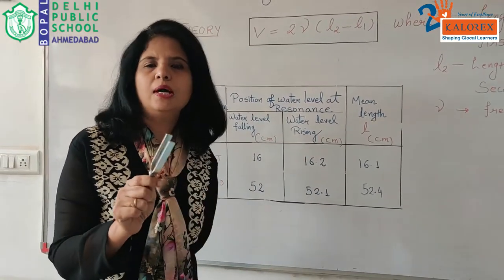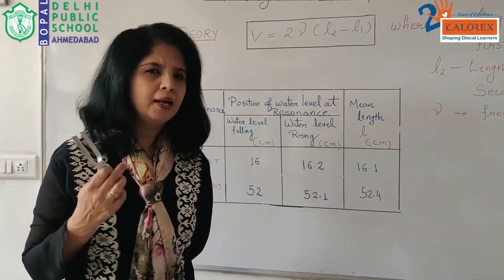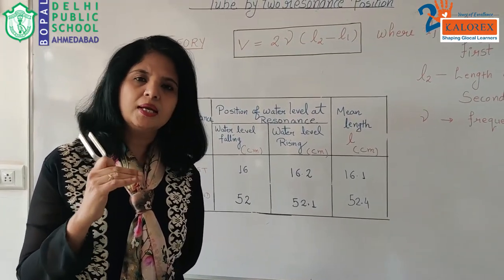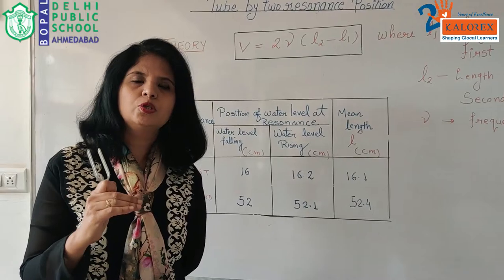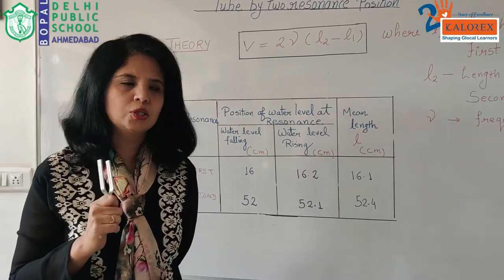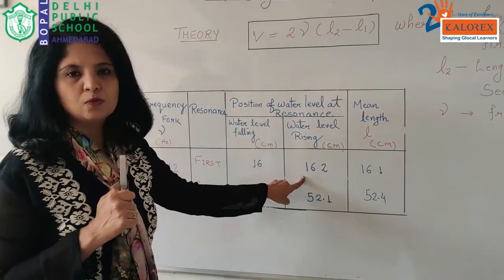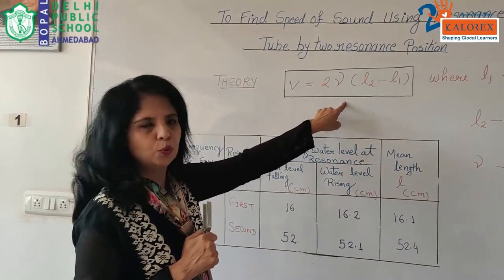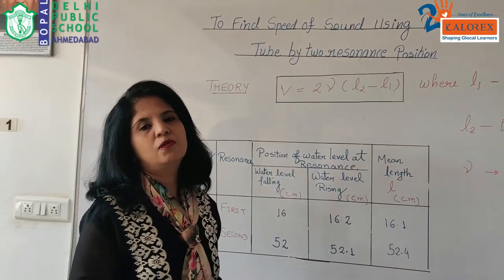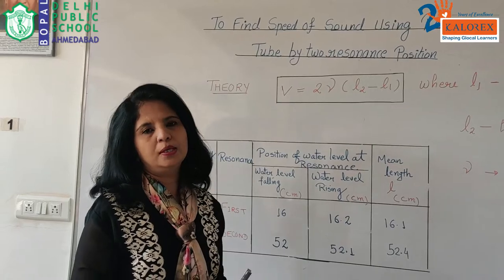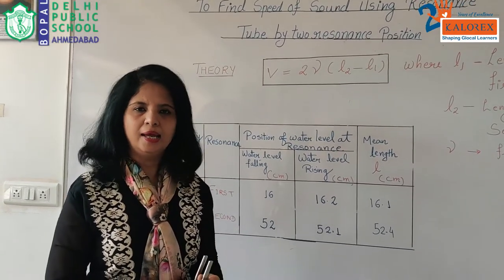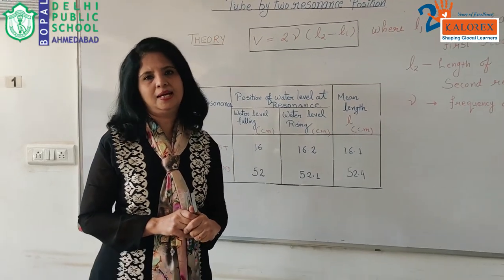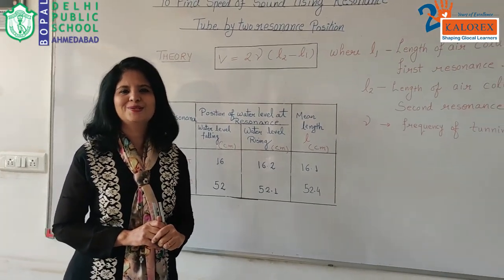We place the tuning fork above the glass tube again and observe the maximum sound. Wherever we get the maximum sound, that position is defined as the resonance position. Finding these values, we substitute them into the formula V = 2ν(L2 - L1) and calculate the speed of sound in air, which comes out to approximately 340 to 360 meters per second. Thank you so much.